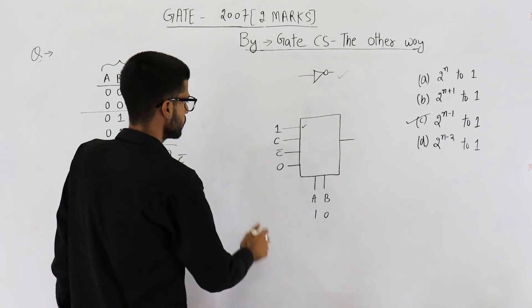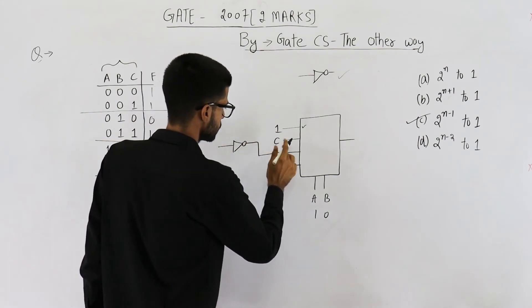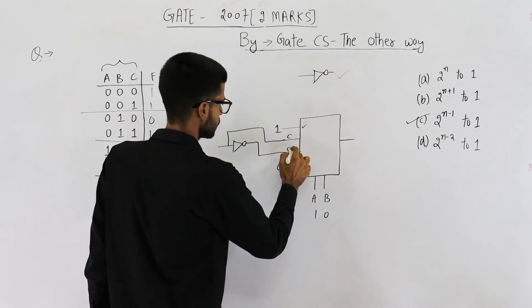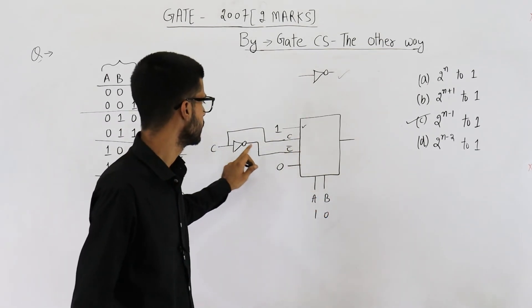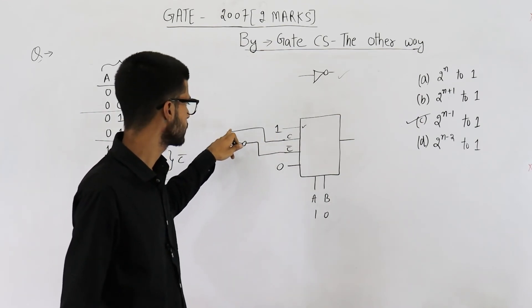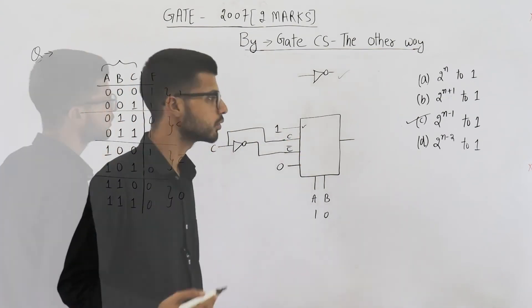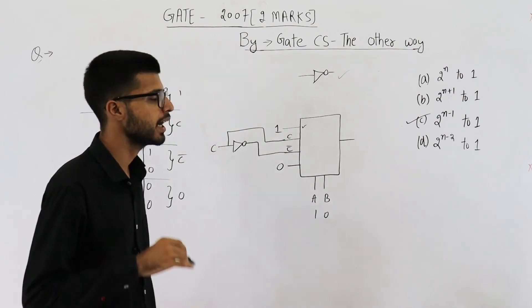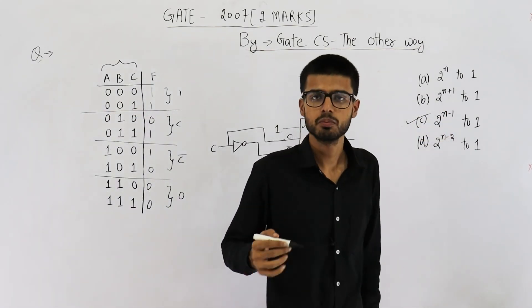This will be actually implemented like this. So this is the input c. This is a. This is b. To invert c. One not get is used. And this is connected as it is. So this one is c only. So you have seen how can we implement a n variable function using two power n minus one multiplexer.